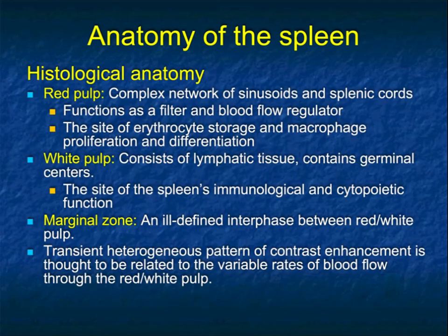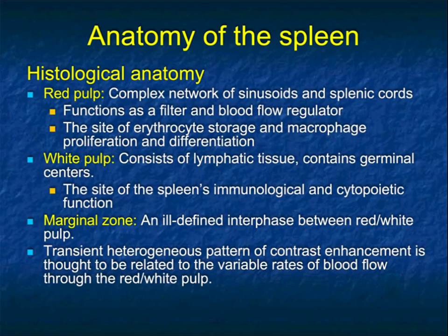From a histological perspective, there's red and white pulp. The red pulp is a complex network of sinusoids and splenic cords, functioning as a filter and blood flow regulator — the site of erythrocyte storage and macrophage proliferation. The white pulp consists of lymphatic tissue with germinal centers and is the site of the spleen's immunological and cytopoietic function. The transient heterogeneous contrast enhancement pattern is thought to be related to variable blood flow through the red and white pulp — the classic 'moray' pattern on early phase imaging that can simulate a splenic lesion.